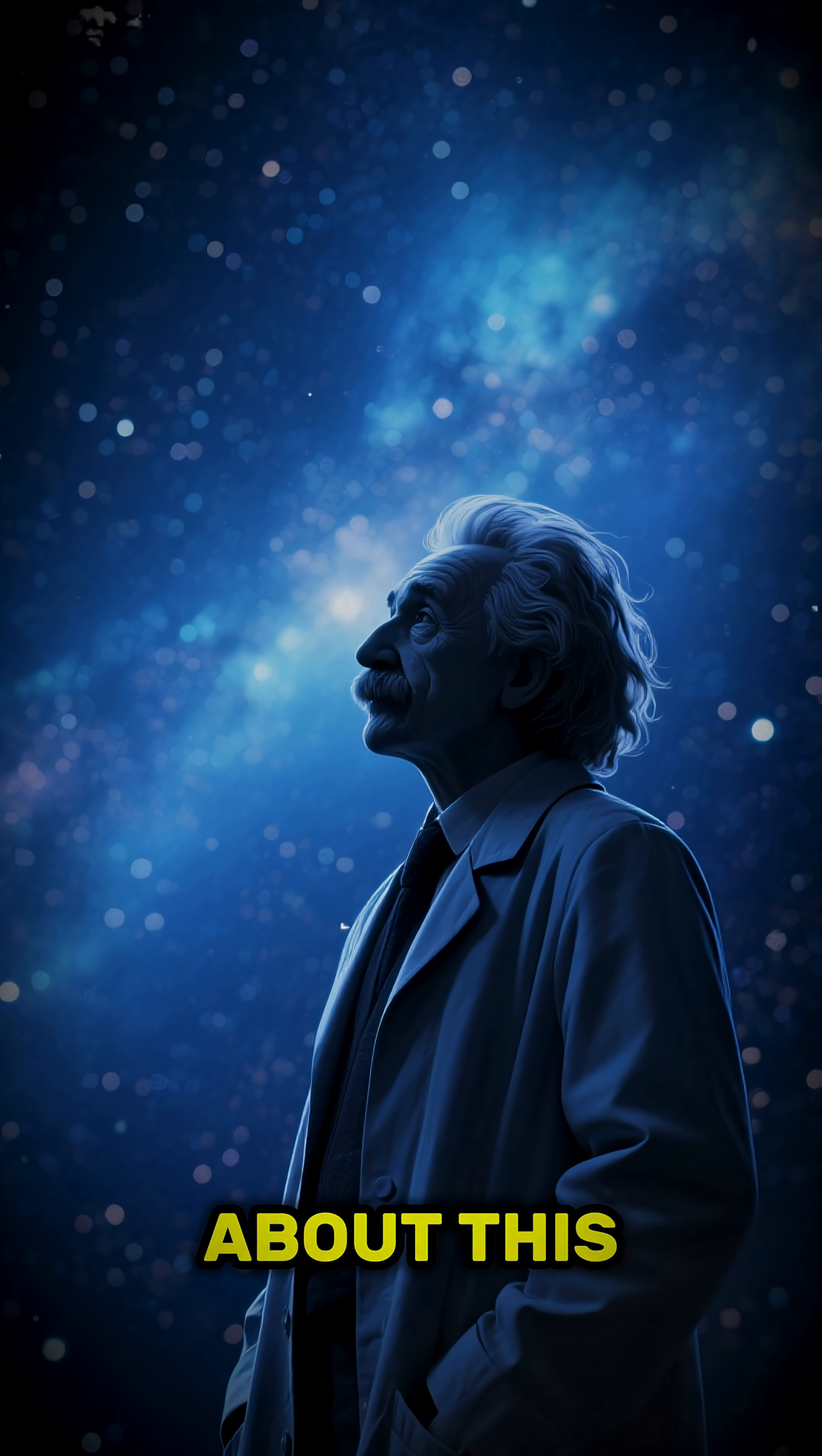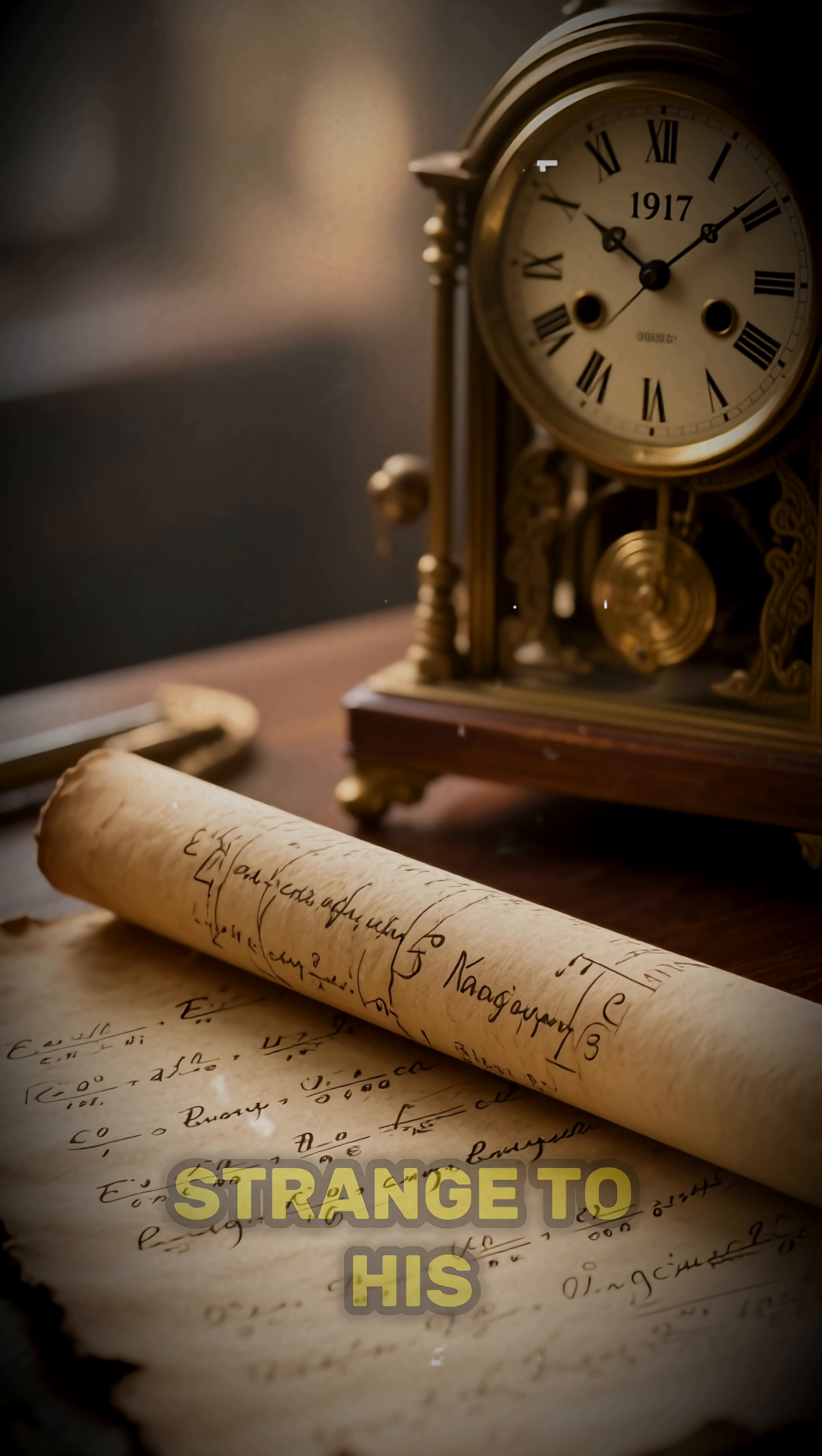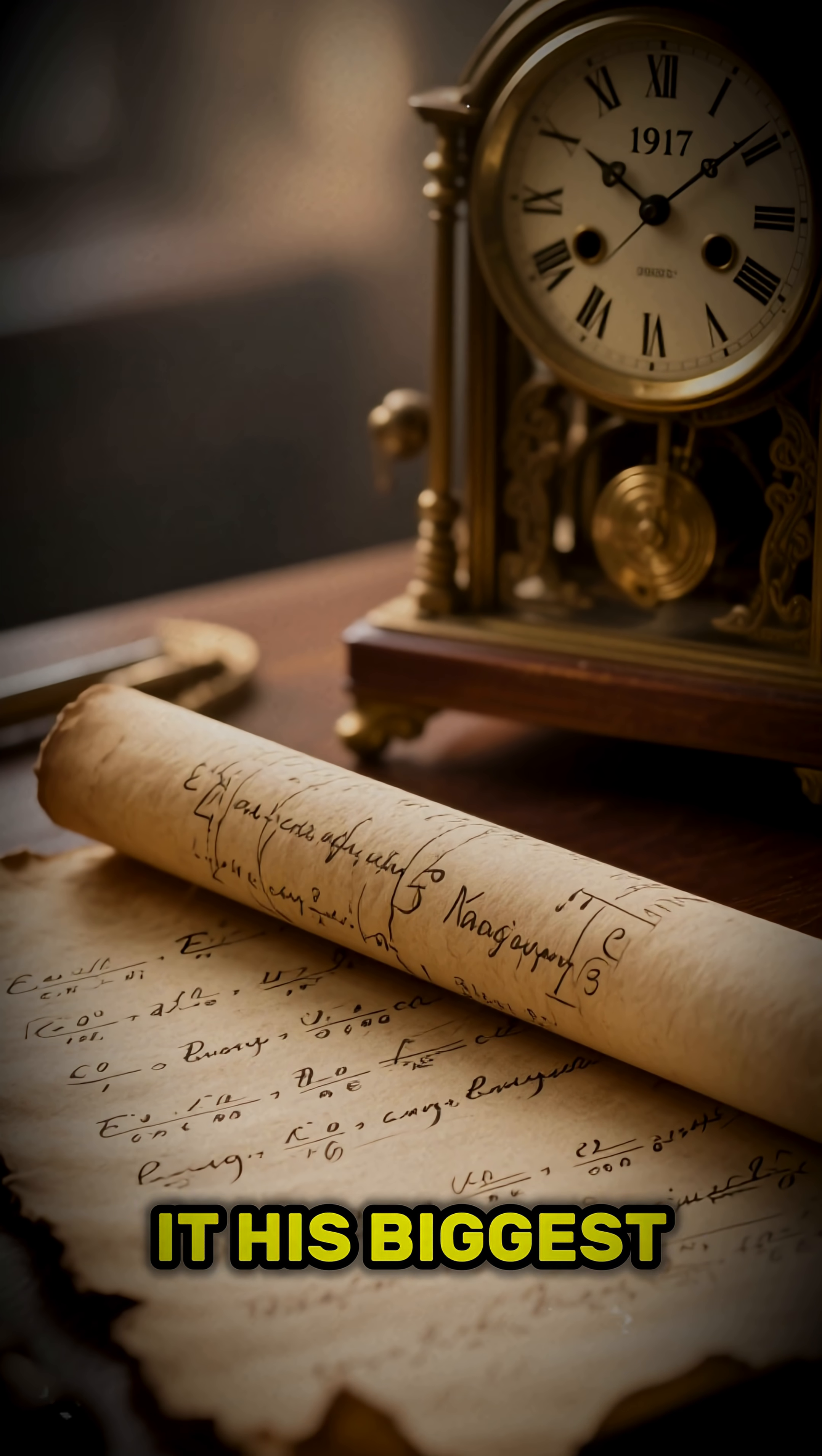Einstein warned us about this. Scientists are still worried. In 1917, Einstein added something strange to his equations, the cosmological constant. He later called it his biggest blunder.